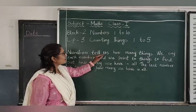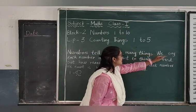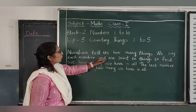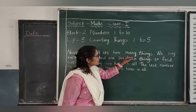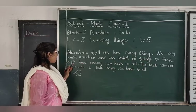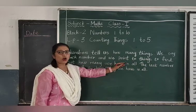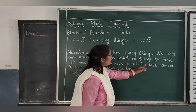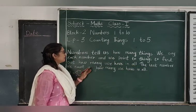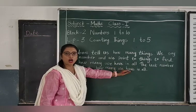Numbers tell us how many things. We say each number and we point to things to find out how many we have in all. The last number we count is how many we have in all.